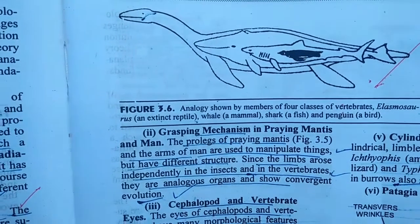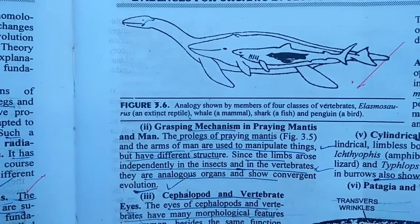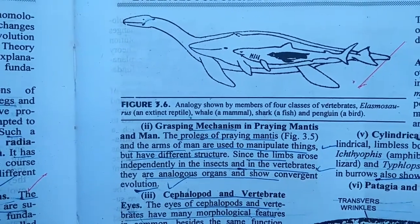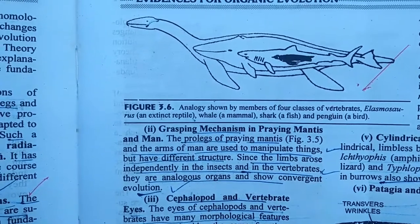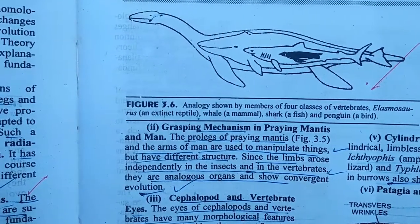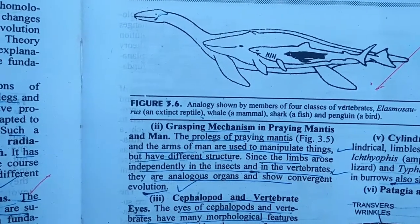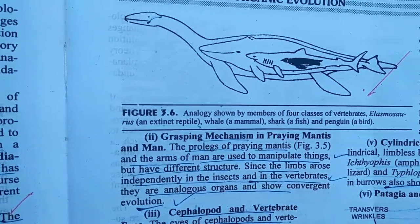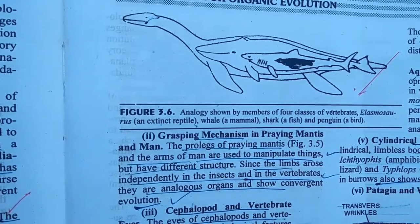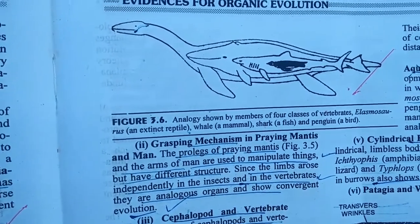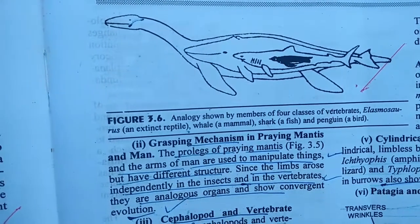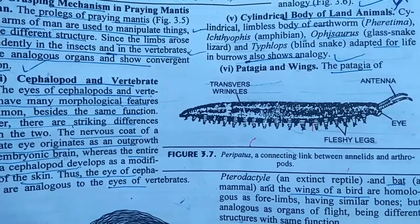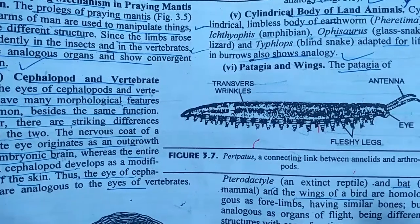Next we have the fusiform body of various aquatic animals such as the elasmobranchs, extinct reptiles, whales (mammals), sharks (fish), and penguins (birds). As you can see from the diagram, they have a similar fusiform body helping in their movement through water. This also represents analogy, but they have different origins and evolutionary status.